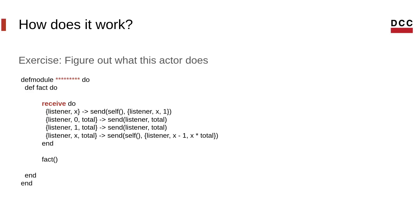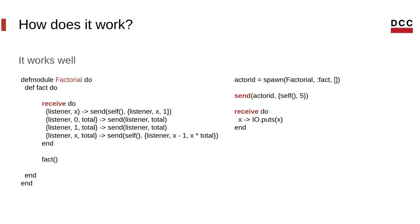To see if you've understood this concept, here is a little exercise — figure out what this actor does. I'll give you a few seconds; if you need more please feel free to pause the video. That's right, this is the factorial actor! The factorial actor works well. In the example on the right, we create it, send ourselves as the listener and five as the number we want the factorial of, and it correctly replies with 120.